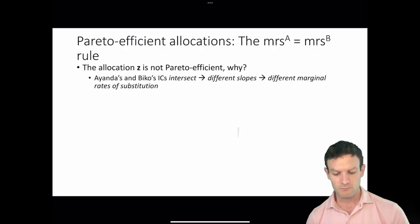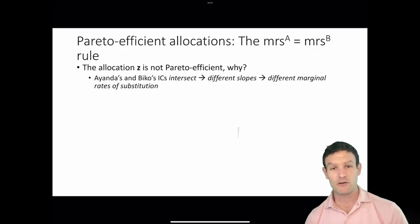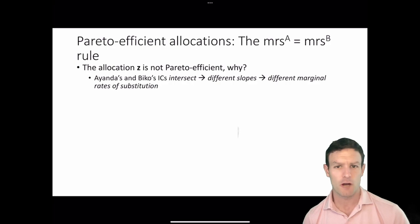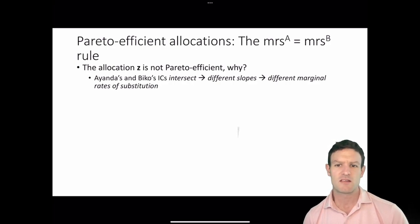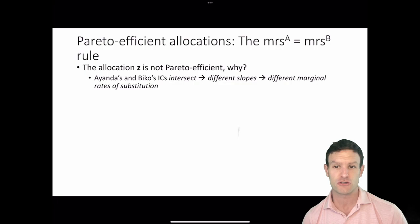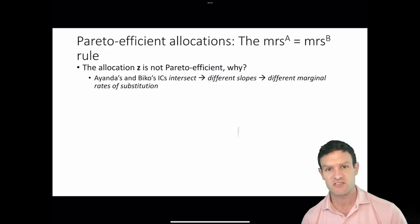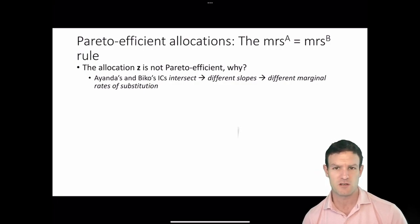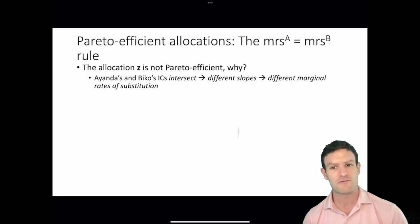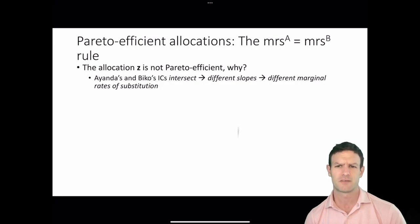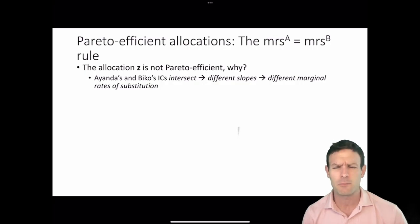The allocation Z is not Pareto efficient. The reason is that the two players have indifference curves that intersect at that point — they have different slopes and therefore they have different marginal rates of substitution. But why does that mean they're Pareto inefficient?